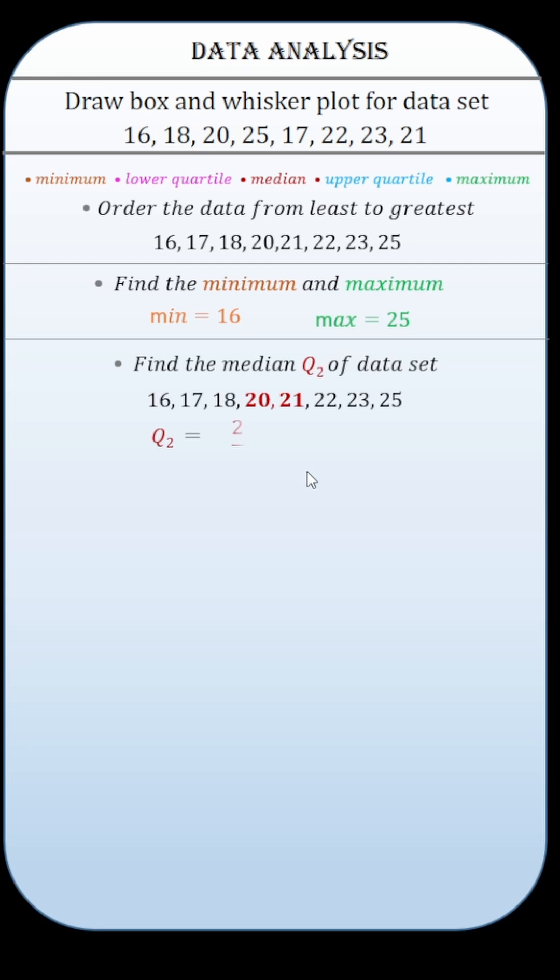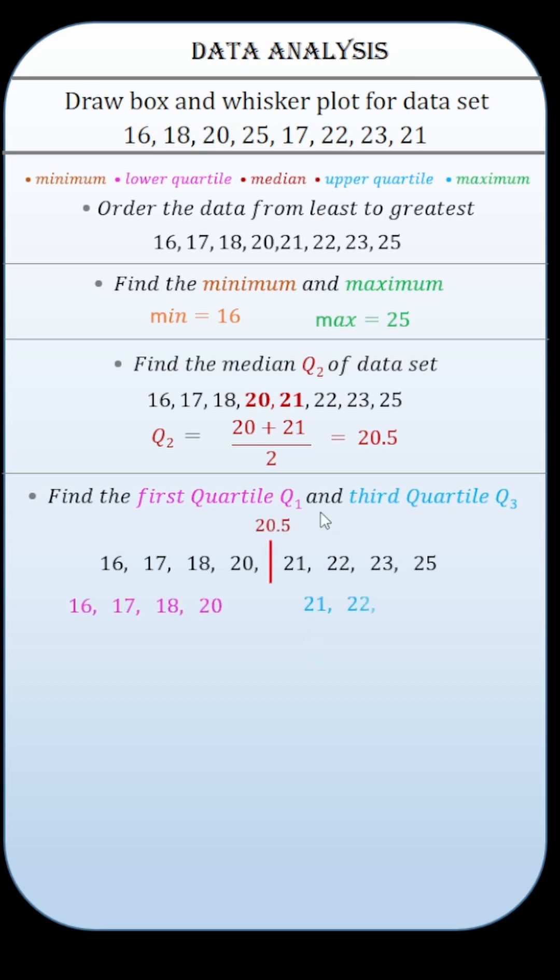Find the median Q2 of data set. Find the first quartile Q1 and the third quartile Q3 of data set. For that, split the data into two halves at median. Then find the median of lower and upper half of the data.